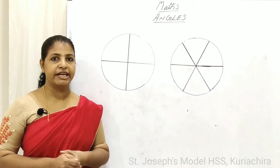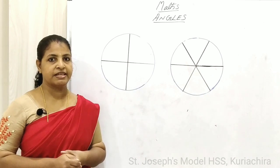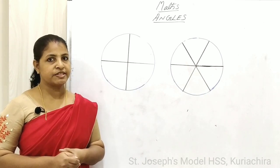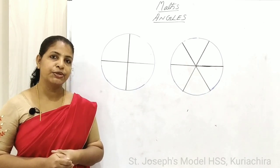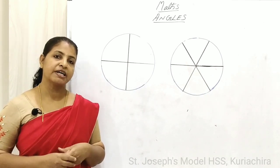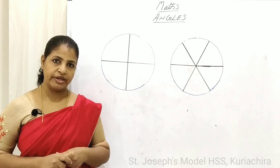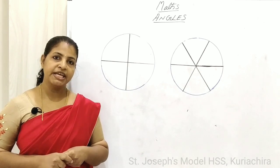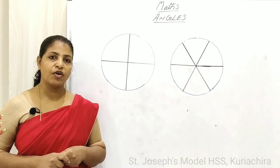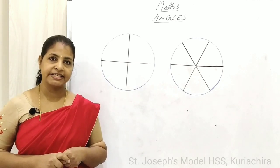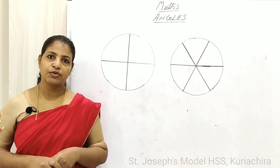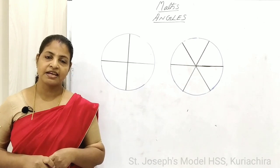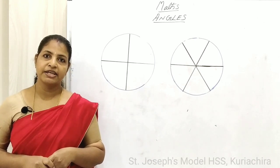Now I will give homework for you. Take out your notebook and write down these questions. First question: divide a circle into eight equal parts using a set square. Second question: how many angles are formed in letter H? Thanks for watching this class. Thank you.